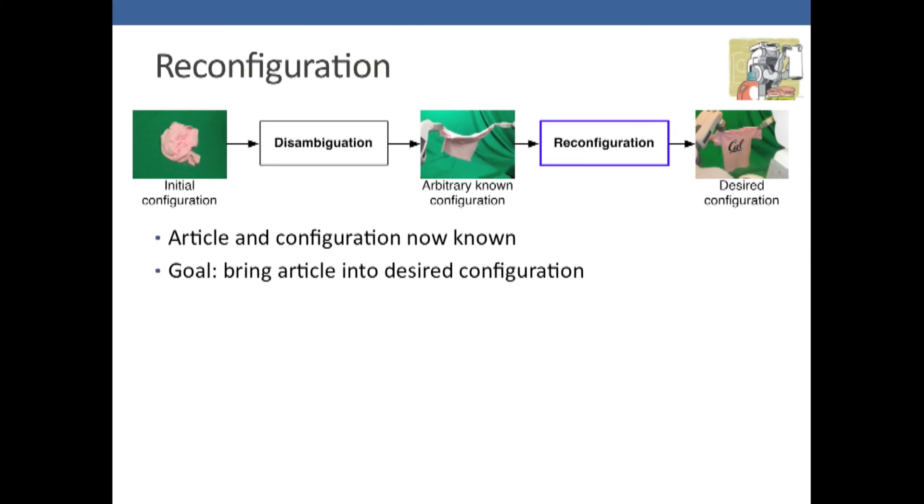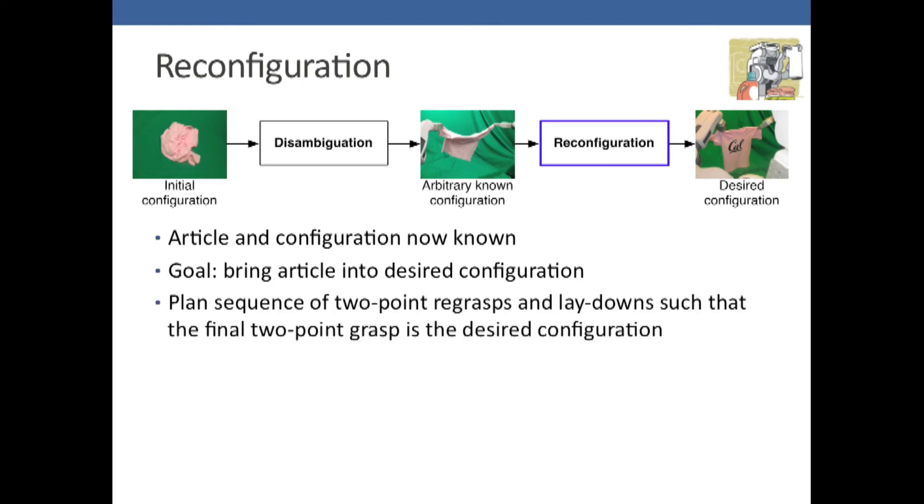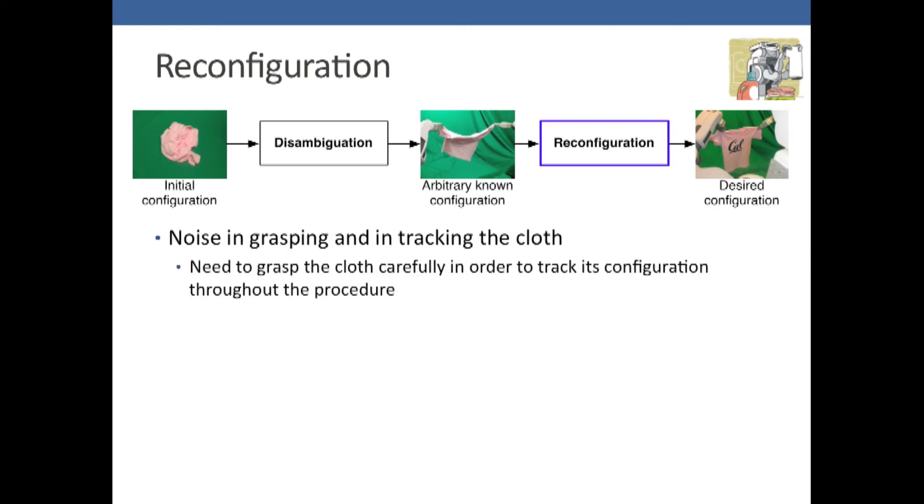The next phase is reconfiguration. We know the article and configuration. We want to hold it by the hips for the pants. The goal is to bring it into the desired configuration. What we do is plan a sequence of two-point re-grasps and laydowns such that the final two-point grasp is the desired configuration. The robot uses the simulator to think through what would happen if it re-grasps it somewhere, and it can search through a sequence of re-grasps.